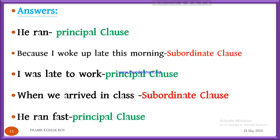That was our today's topic. To summarize: phrase and clause are both important terms in English grammar and are parts of a sentence. A phrase has no subject and no verb, while a clause has a subject and a verb. There are many types of phrases. Clauses are of only two types: principal and subordinate. A principal clause can stand alone and express a complete thought, while a subordinate clause cannot stand alone and cannot express its thought. That was our today's lesson. Have a nice time. See you again. Goodbye.